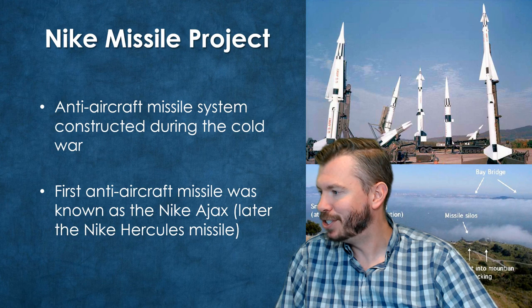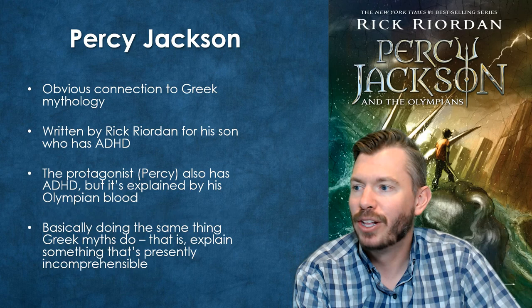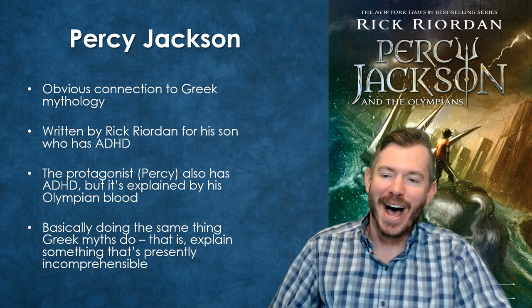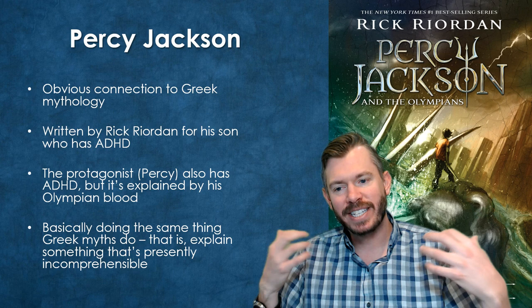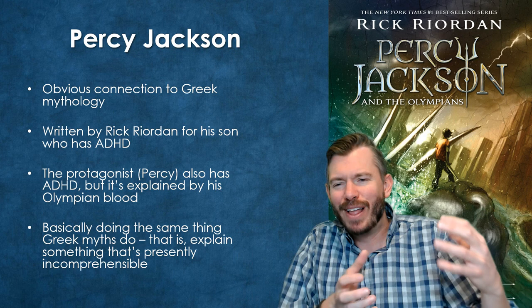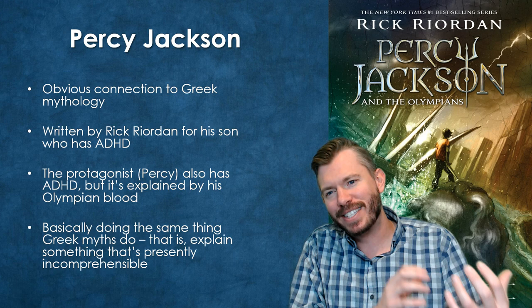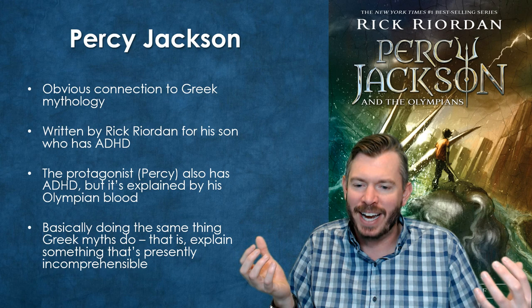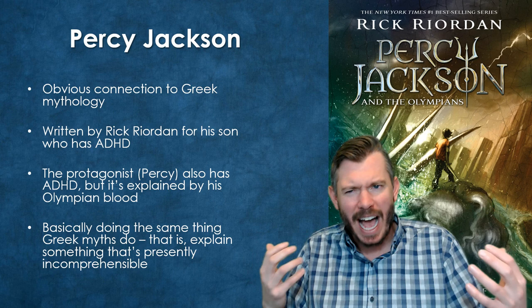Finally, myth and literature. I'm sure a lot of you have read the Percy Jackson stories — obvious connections to Greek mythology. One of the cool things is it's written by a guy whose son has ADHD, and that's one of the things placed on the protagonist in the book. In the book it's explained by Olympian blood. It's kind of cool in the sense that this is what Greek myths do all the time: they take something that's difficult to comprehend, like ADHD, and come up with an explanation for why that's occurring.